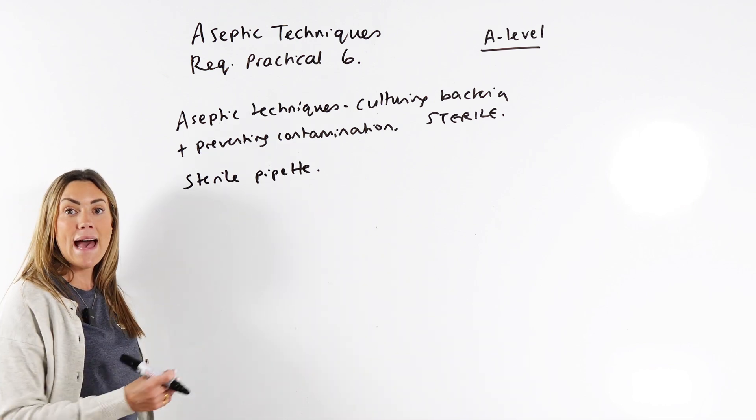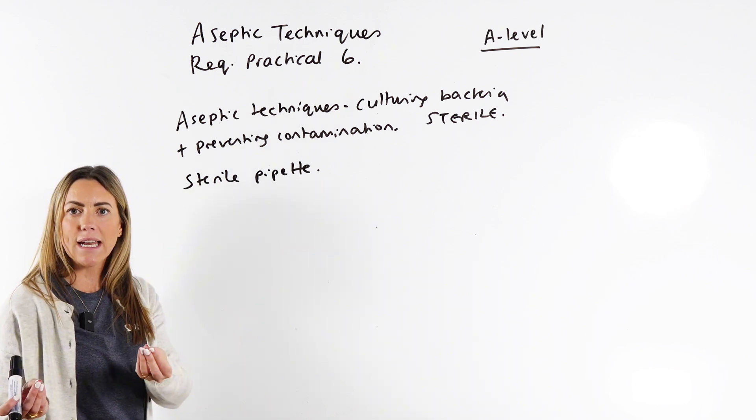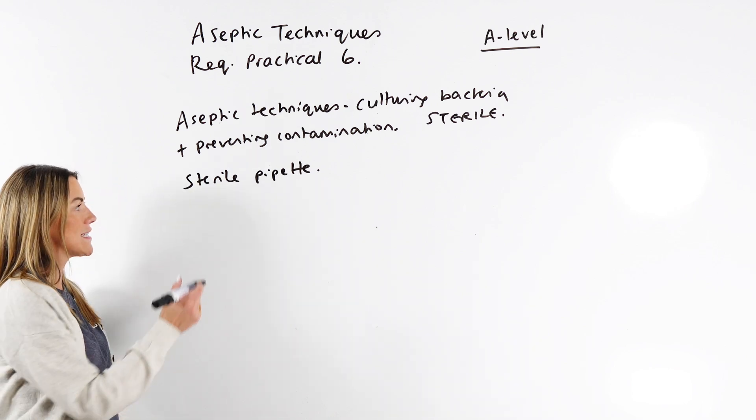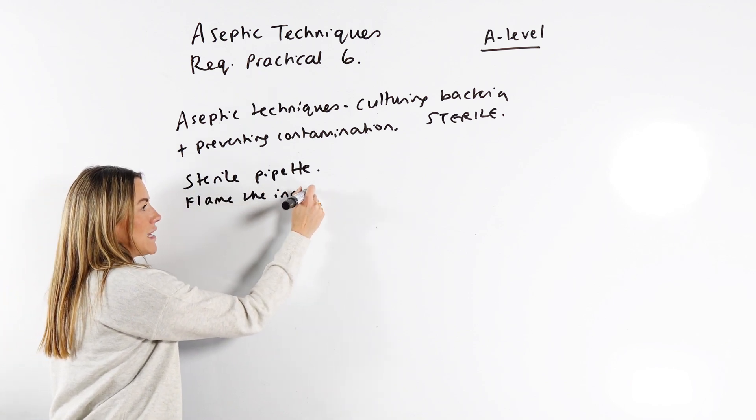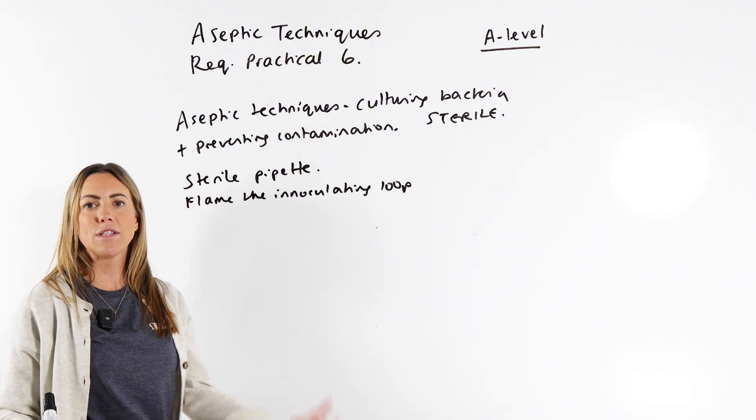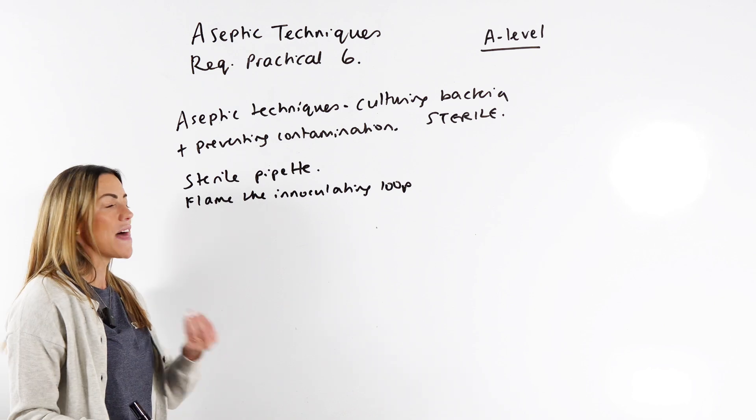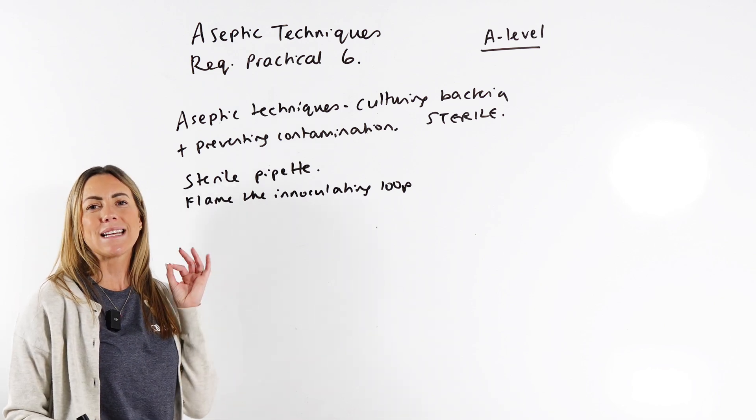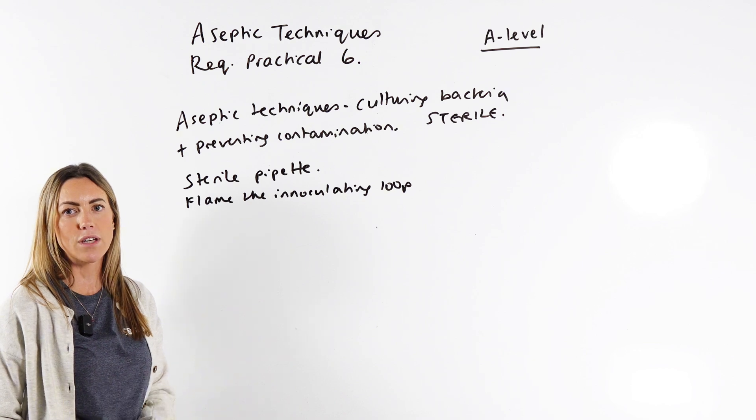If instead of a pipette, you're using like a metal or wire inoculating loop to transfer your bacteria, you can say flame the inoculating loop. So you pass it through a Bunsen burner flame until it glows red. You know that that heat from the flame is going to kill any bacteria that might already be on that inoculating loop.